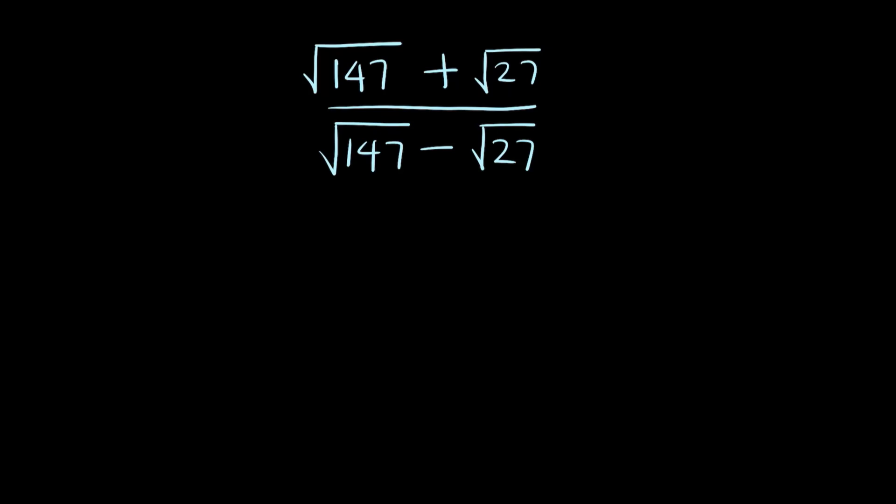Hello everyone. In this video, how do we evaluate this square root problem? We have the square root of 147 plus the square root of 27, all divided by the square root of 147 minus the square root of 27.